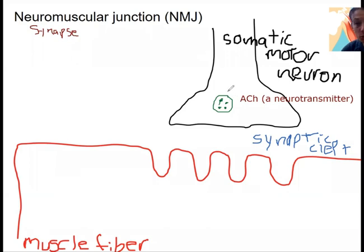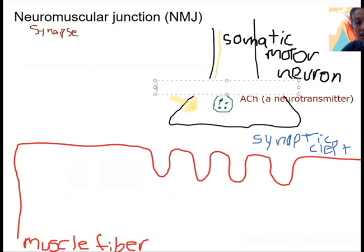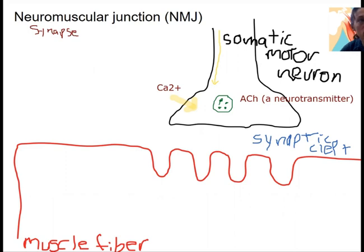What causes this vesicle to be released? An action potential travels down the motor neuron. We're going to have calcium-dependent vesicle release, meaning calcium flows into the cell because voltage-gated calcium channels were triggered. This causes the vesicle to fuse with the presynaptic motor neuron's membrane, releasing neurotransmitter into the synaptic cleft.